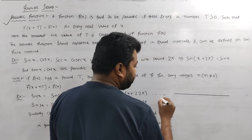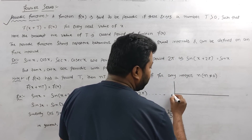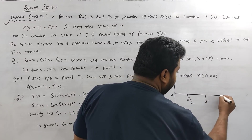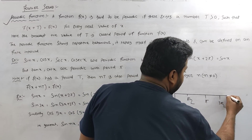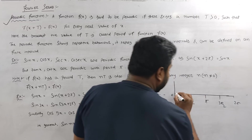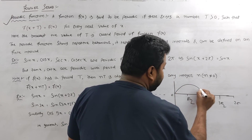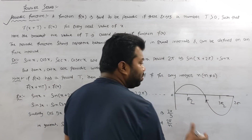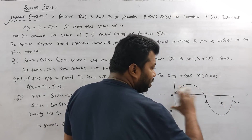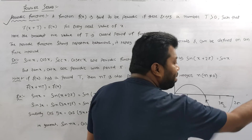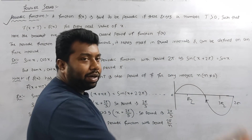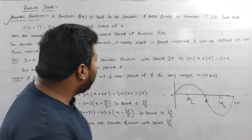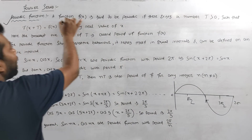Consider the sine function. On the graph, we have values zero, π/2, π, 3π/2, and 2π. The sine x graph repeats. After a full cycle, it repeats again. At 2π, it repeats — so the period of sine x is 2π.